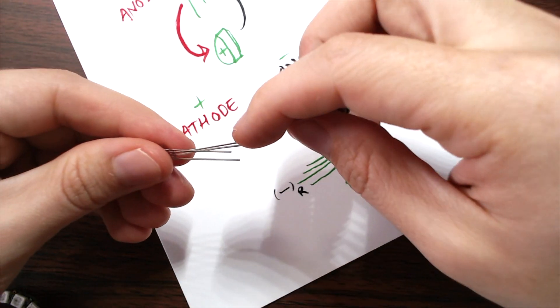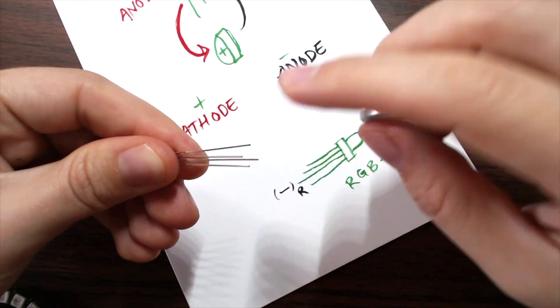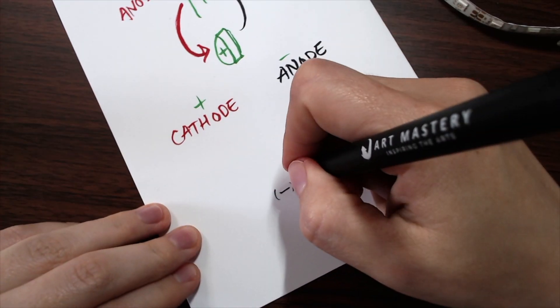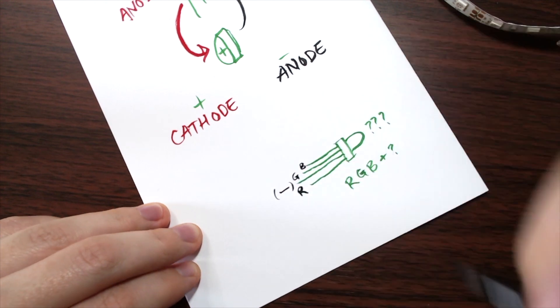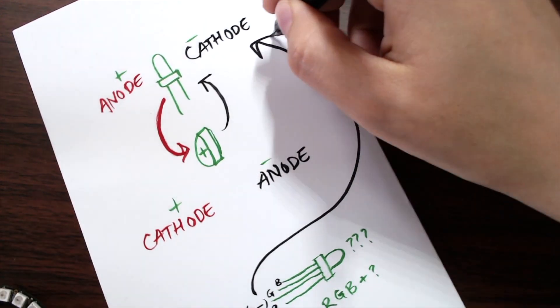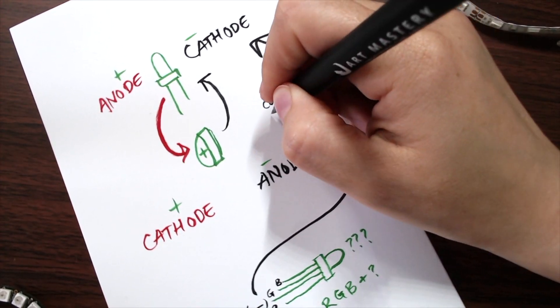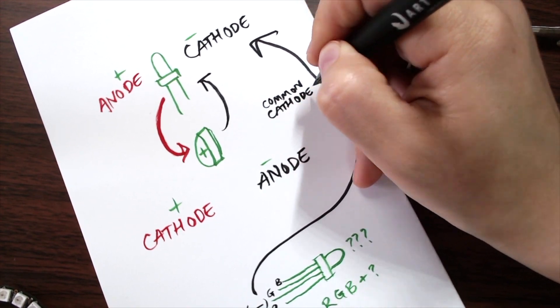You can get common cathode or common anode RGB LEDs. The longest leg is going to be the common one. In this case, that's the ground side. So this is a common cathode RGB LED. All the colors share a single ground leg, and each has its own positive leg, or anode.